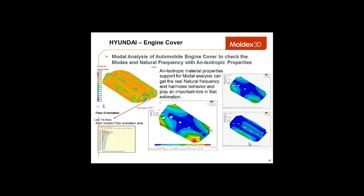Now, in this Hyundai engine cover situation, we studied the isotropic material properties support for model analysis to get the real natural frequency and harmonic behavior. This played an important role in that estimation. And we used the I2 interface to export the fiber orientation to Ansys, which was then able to run a natural frequency test on the model. With this, we were able to get various natural frequencies caused by various fill times and designs.